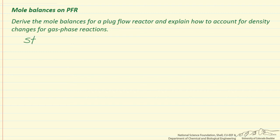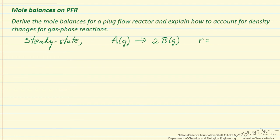We are going to do this for a steady state reactor — things are not changing with time — and we will look at a gas phase reaction where one mole of A reacts to two moles of B, with a generic rate expression to the nth power. Here R_A is minus k·C_A^n, and R_B is plus two times k·C_A^n, where the rate for a specific species is divided by its stoichiometric coefficient.